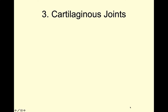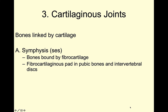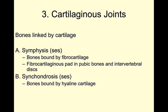Our third type of joint are the cartilaginous joints — these link bones together by cartilage. Our first type is a symphysis, or symphyses in the plural. Bones in these joints are bound together by fibrocartilage. So when we look at our pubic bones or our intervertebral discs, we see this fibrocartilaginous joint. The synchondroses are where bones are bound together with hyaline cartilage. We just saw this with our epiphyseal plate in children. And if you've watched the axial skeleton lecture, the costal cartilage going from your ribs to your sternum is also hyaline cartilage and a synchondrosis.